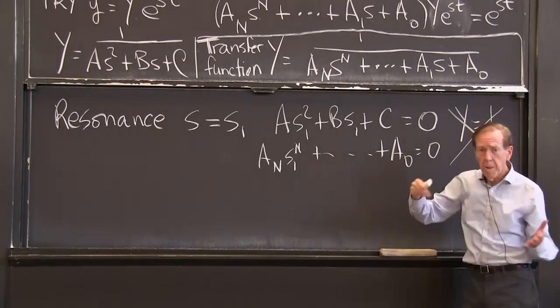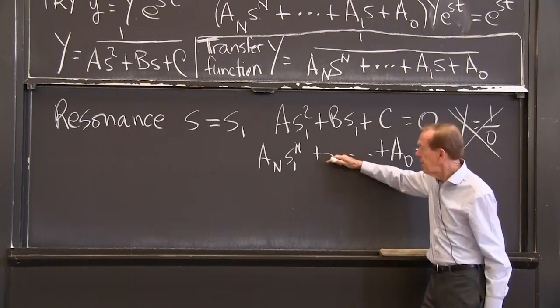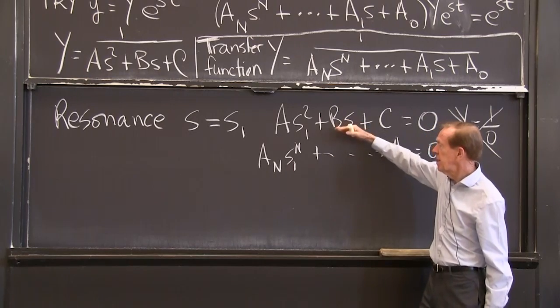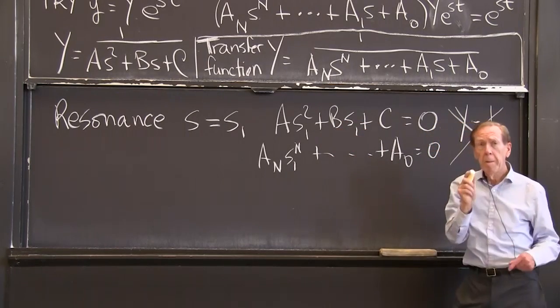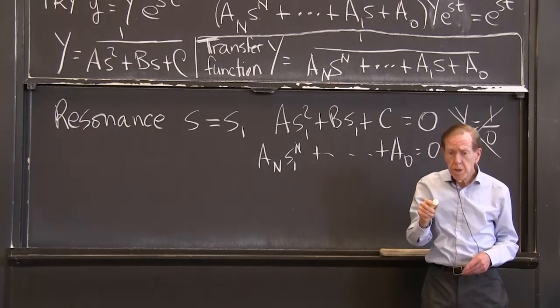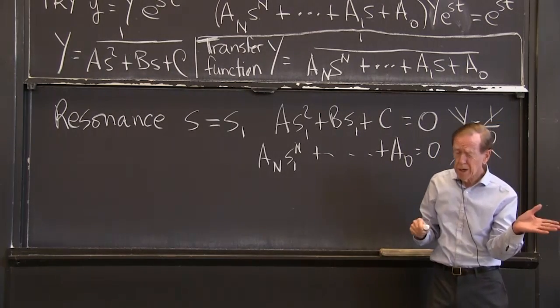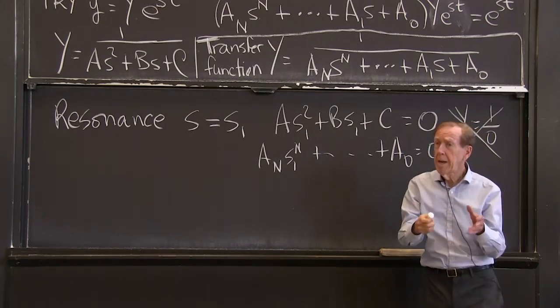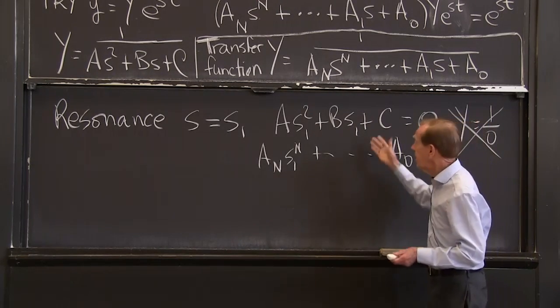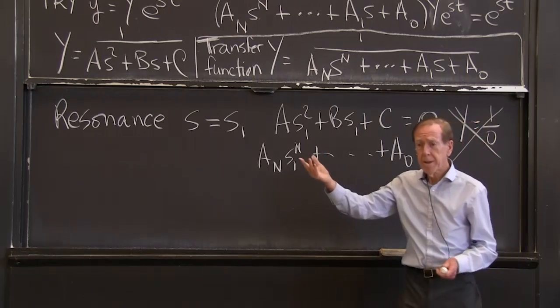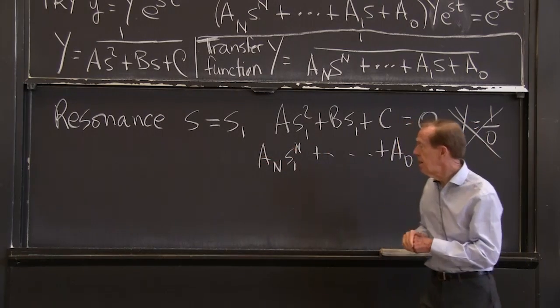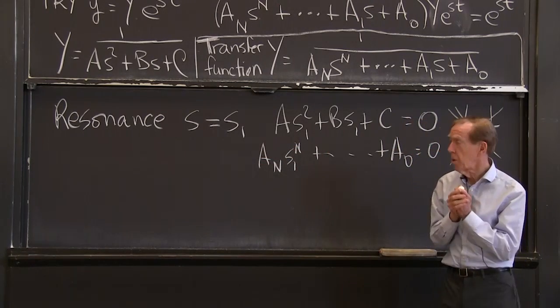When s equals, say, s1, I'll just pick s1. And when a s1 squared plus b s1 plus c is 0. So y would be 1 over 0, and we can't live with that. I've written here for the second degree equation, same possibility for the nth degree. An s1 to the nth plus a0 equals 0. That would be a problem of resonance.